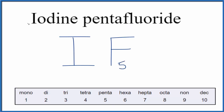For the iodine, there's nothing written in front, so when there's nothing written in front, we assume we just have one — so it's just IF₅. That's the formula for iodine pentafluoride.